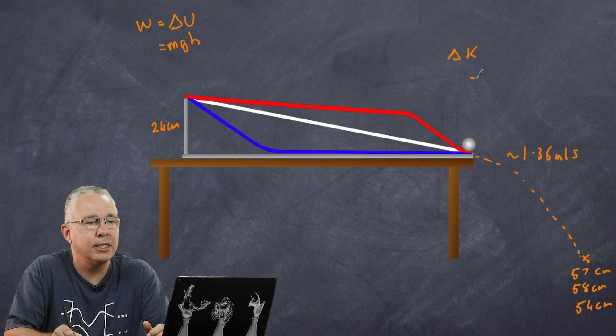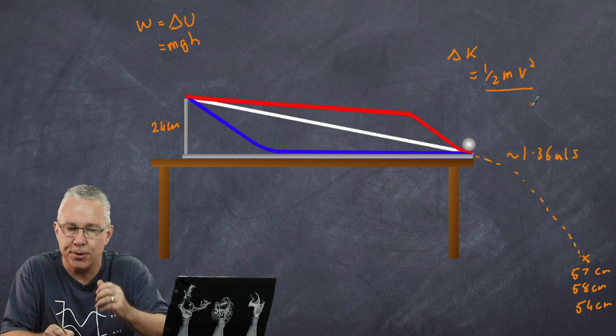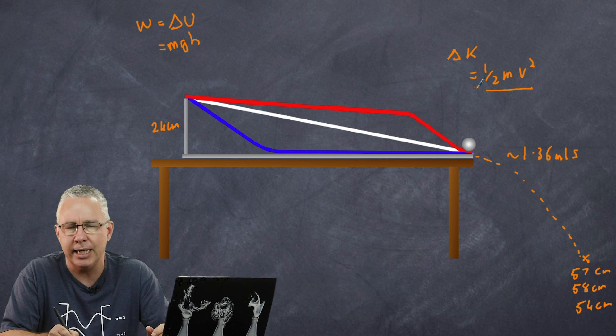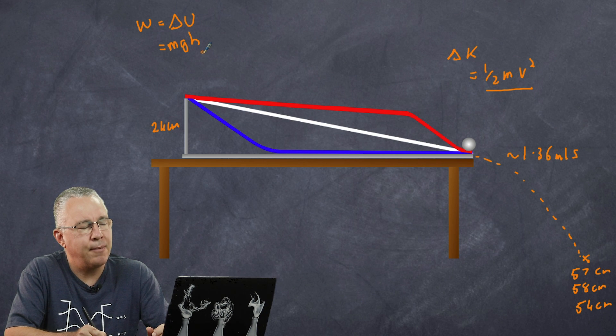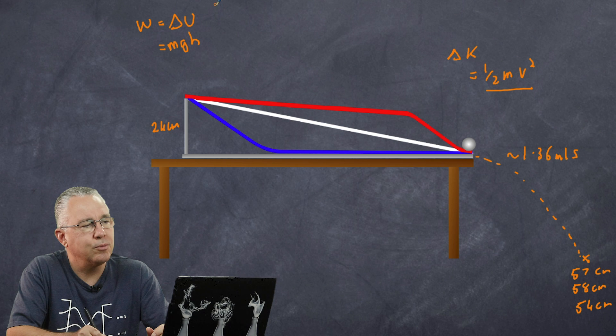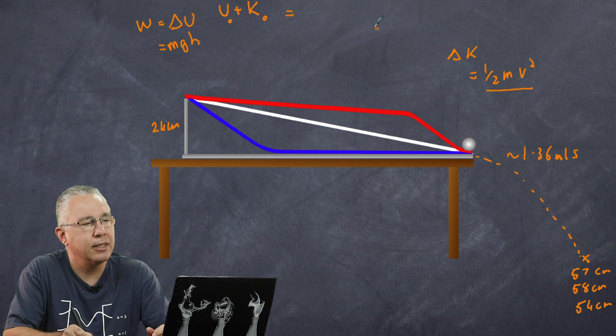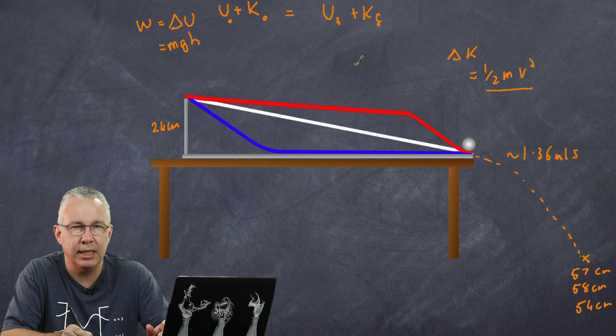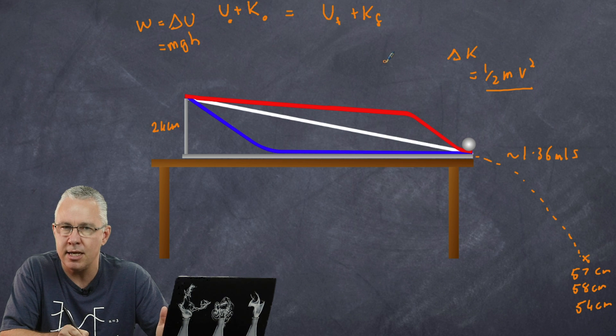So my delta K is equal to a half mv squared, and this is of course the same for all three balls. They all ended up having the same loss of potential energy and they all ended up having the same gain in kinetic energy. What does that mean? Well that means that if I have my total potential energy at the beginning and my total kinetic energy at the beginning, and we'll call this nought, that ended up being the same total potential energy at the end plus my total kinetic energy at the end. So in other words, the total energy that they had at the beginning is equal to the total energy they had at the end, and that's the concept of the law of conservation of energy.